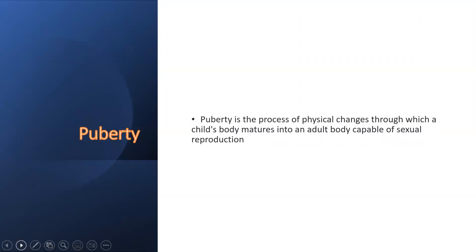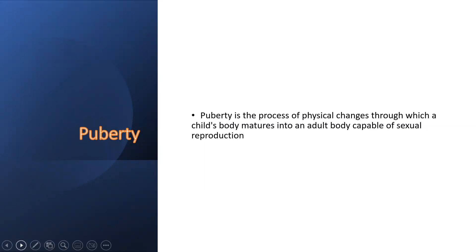So in the reproductive system, puberty is a very important part. Puberty is the process of physical changes through which a child's body matures into an adult body capable of sexual reproduction.